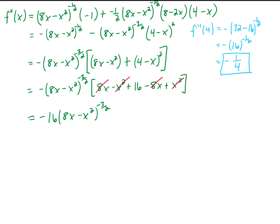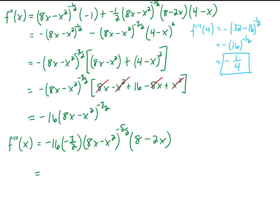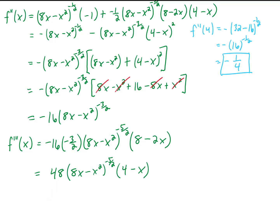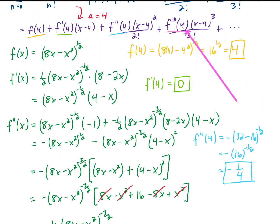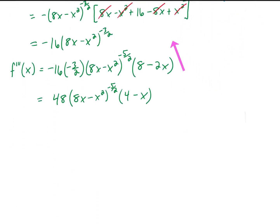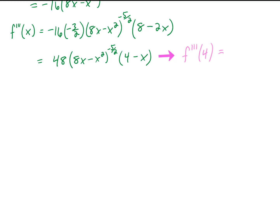Now we're set up to take the third derivative. Using the power rule and chain rule, the derivative of the inside function is 8 minus 2x. We can simplify by factoring a 2 out, which gives us 48 times (4 minus x) out front. However, when we plug in x equals 4 to get f'''(4), this factor goes to 0, so f'''(4) equals 0 as well. That means we need one more derivative to get a third non-zero term.